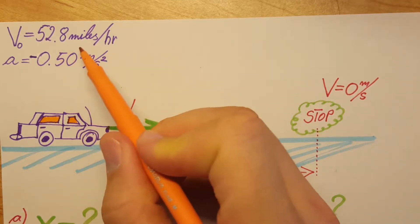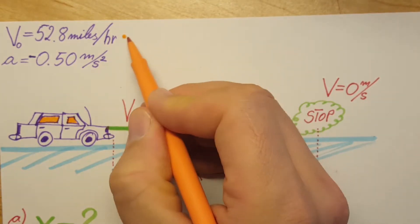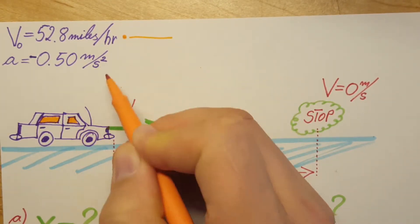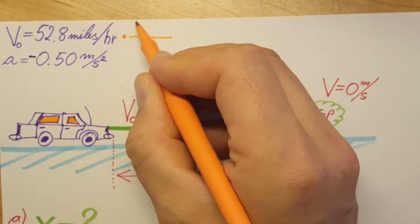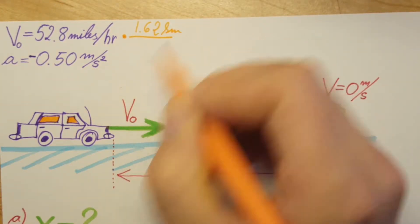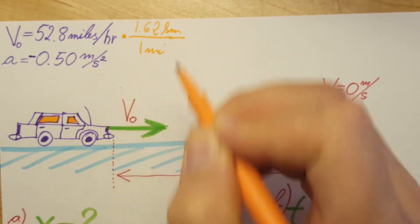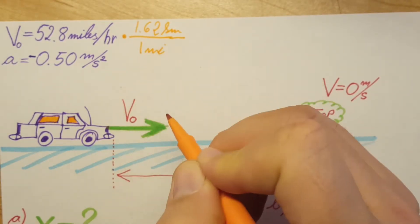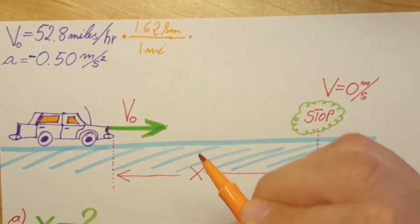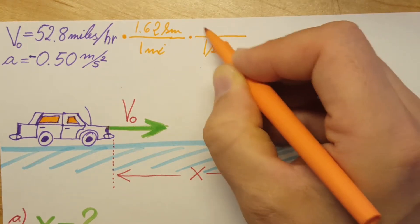We're gonna do some unit conversions, so we multiply by 1.62 kilometers over one mile, then change kilometers into meters - one kilometer has 1000 meters.